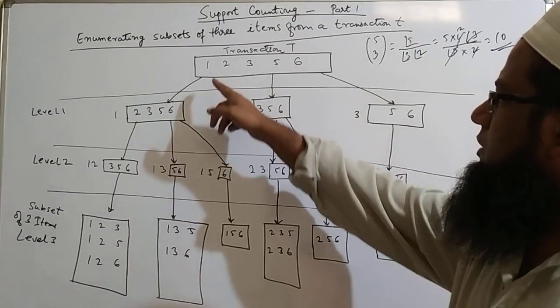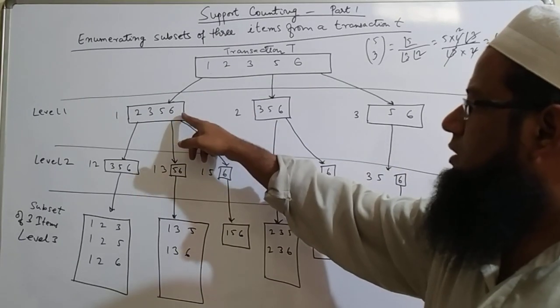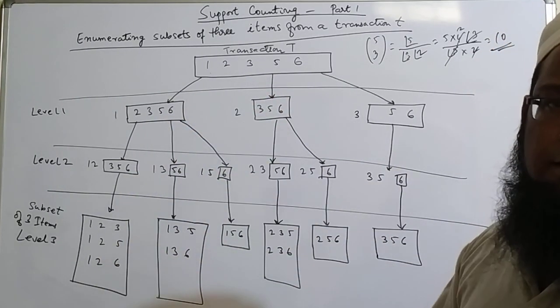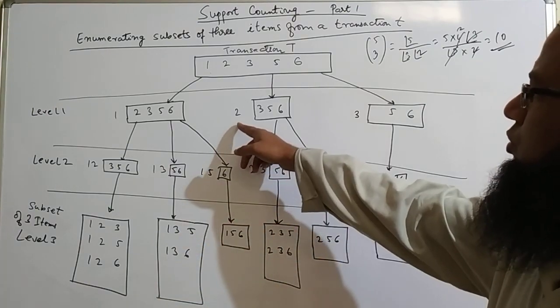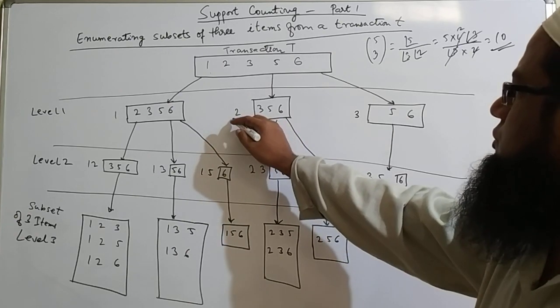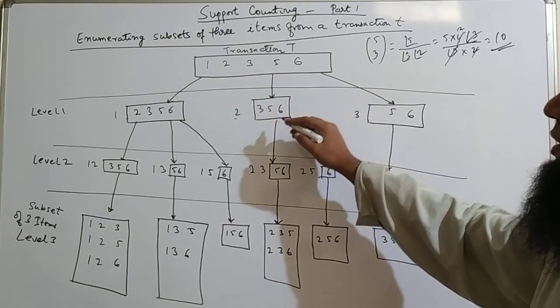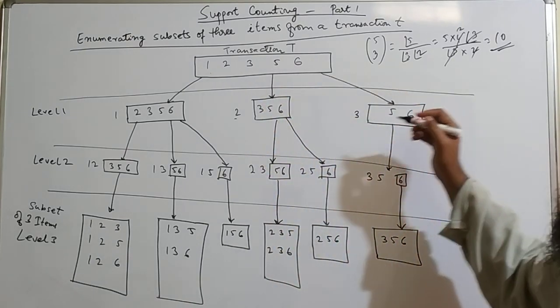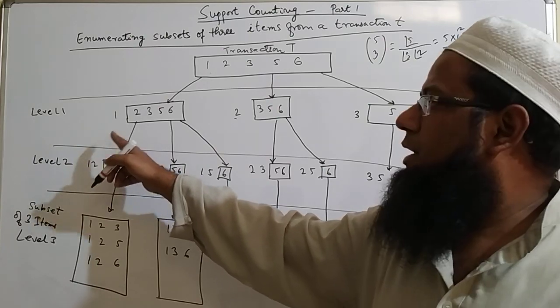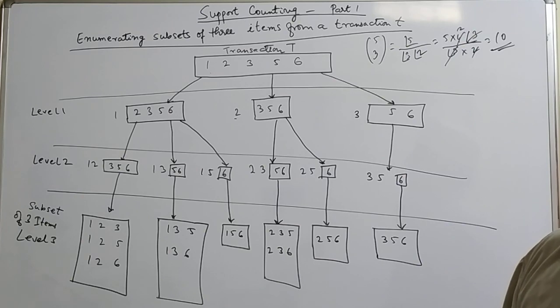So what are we going to do is that we'll take one out of the box and remaining item 2, 3, 5, 6 that will be a possible candidate item in the next level. In level, the next we can take the second item that is 2 and then 3, 5, 6 will be in the box. And 3, 5, 6 will be in the box in the level 1. So level 1 means you have to take out one item from the five items. One after the another and see the possible combination.